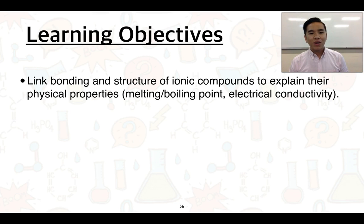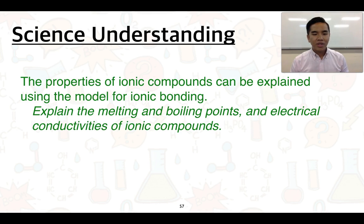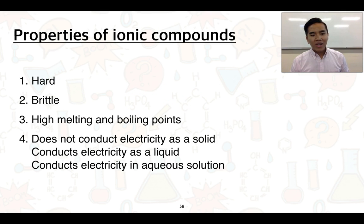During the last video in this series, we're going to focus on this learning objective. We're going to look at linking bonding and structure of ionic compounds to explain their physical properties - in particular melting and boiling points, electrical conductivity, but also a couple of other physical properties as well. The properties of ionic compounds can be explained using the model for ionic bonding, and we're going to look at four main physical properties.